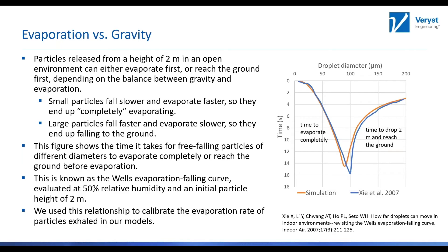To get the evaporation rate, we did some models putting particles in air and letting flow go around them to see how they shrink — but the evaporation rates were too high. So we looked at the literature and found the Wells evaporation falling curve, which drops particles from two meters to find how they terminate. Particles less than 100 microns evaporate to nearly a completely small size before reaching the ground. Beyond the cusp around 100 microns, larger particles evaporate but fall faster and reach the ground. We then scaled our evaporation curves to match that experimental data.